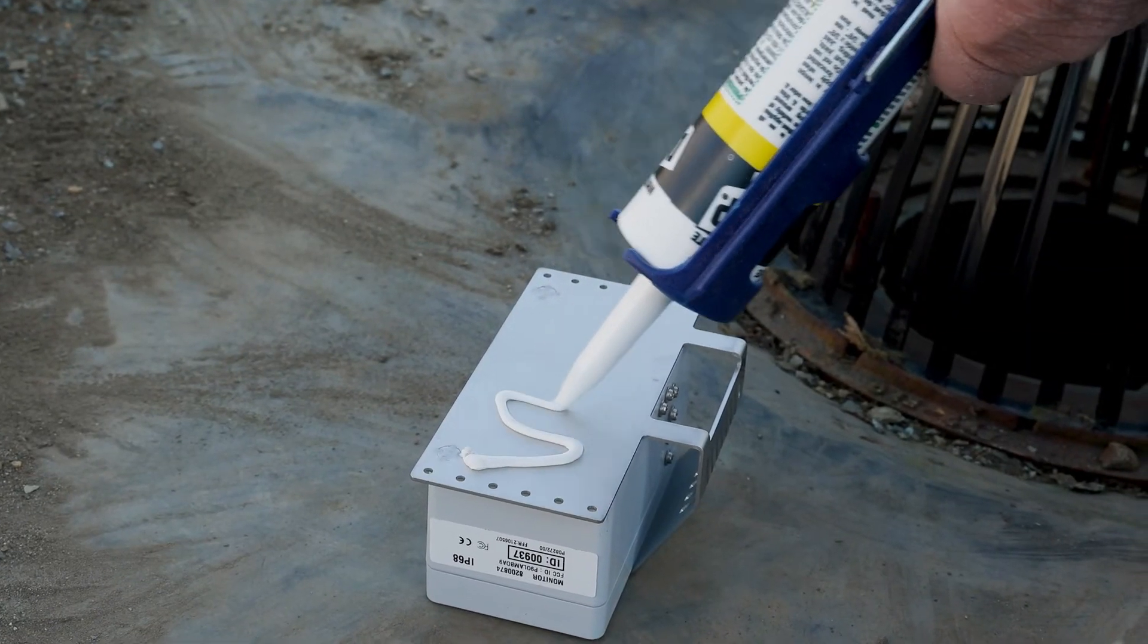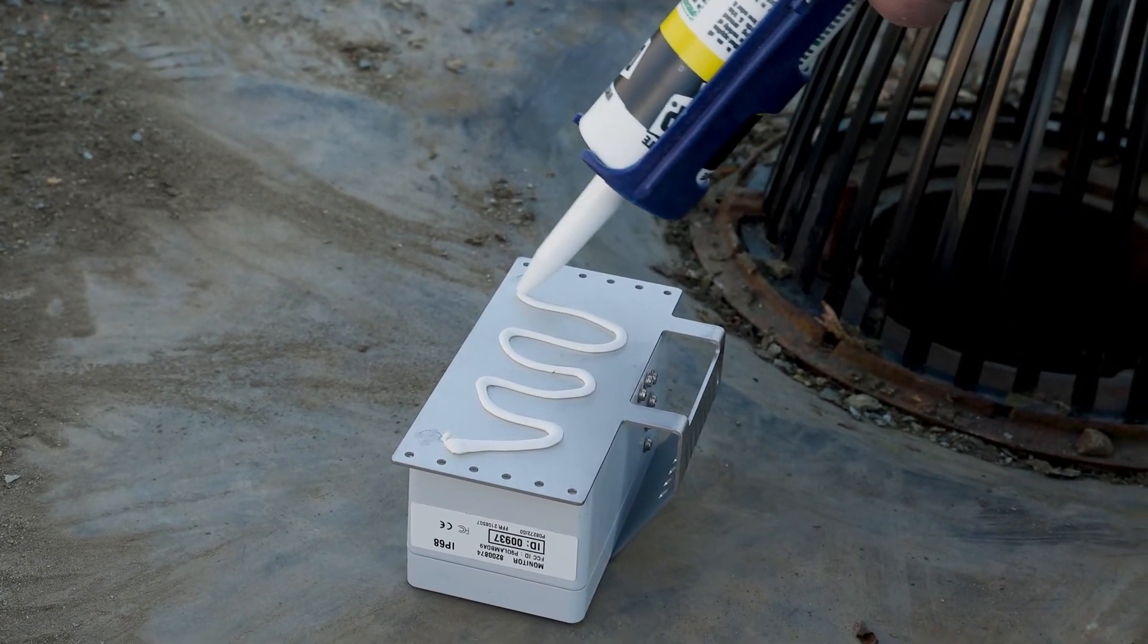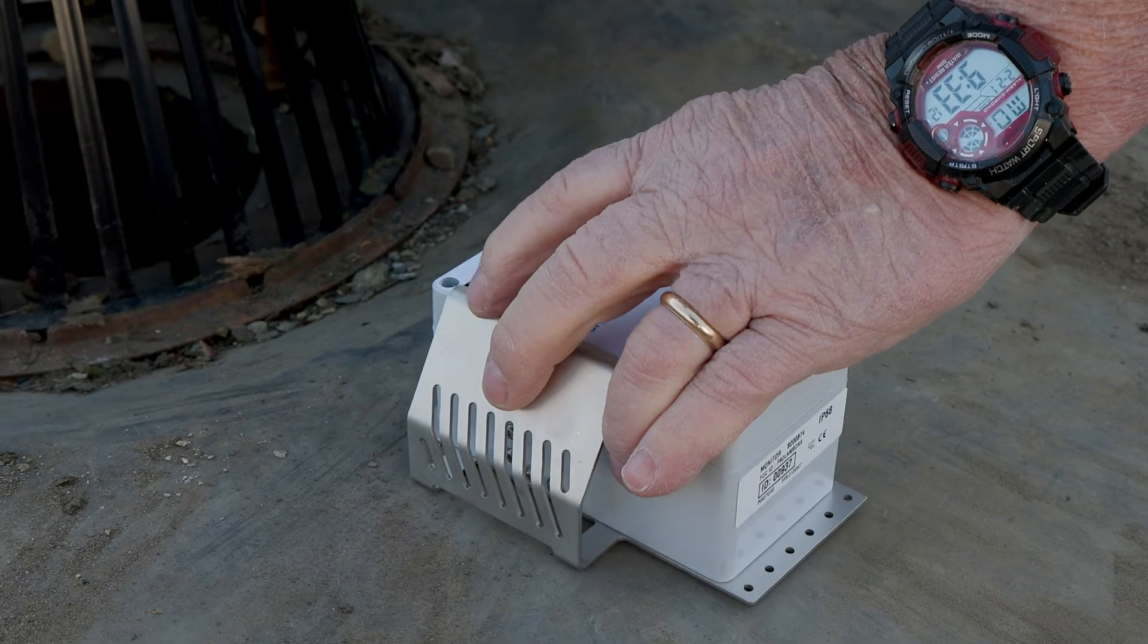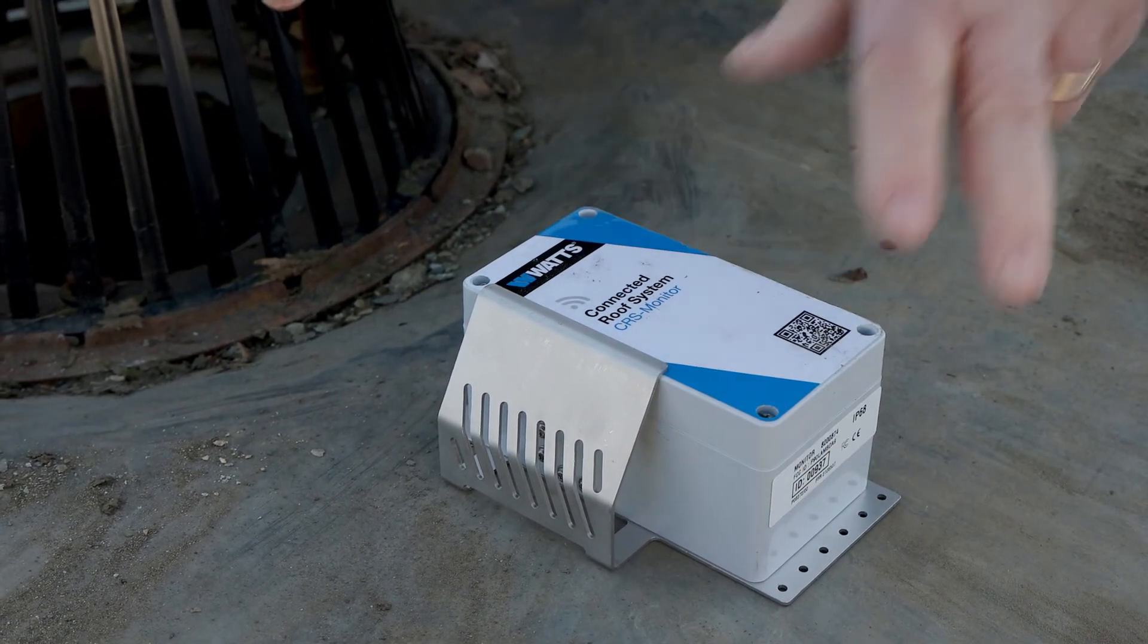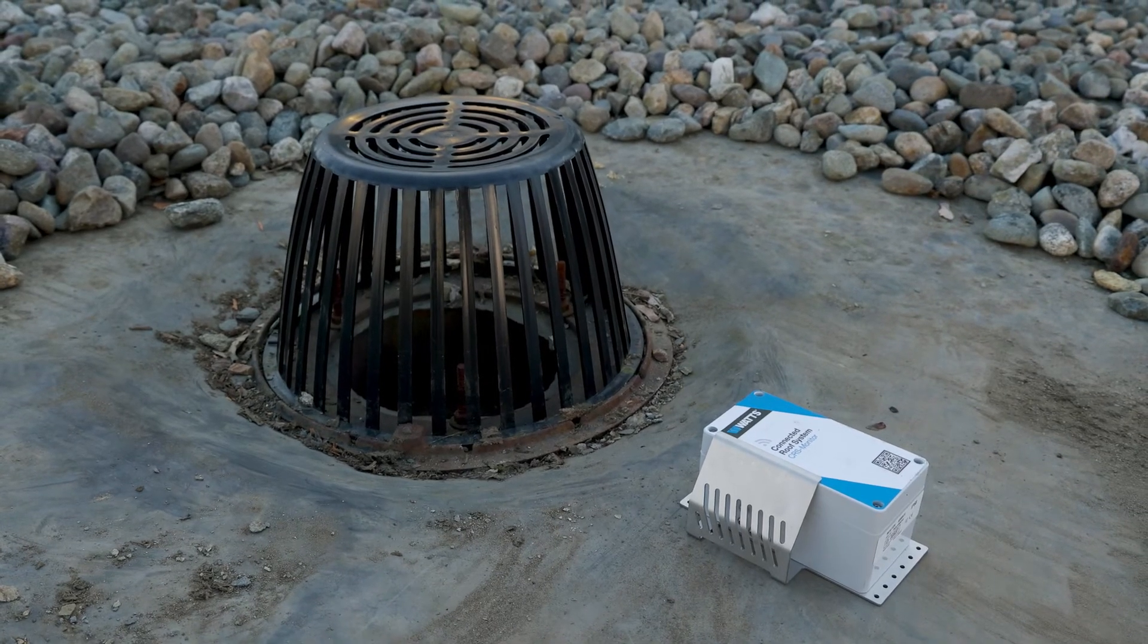You don't have to compromise the integrity of your roof with screws and bolts. Simply glue the monitors next to the drain in this position. It can be mounted next to any type of drain.